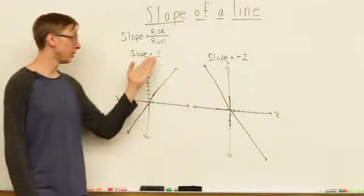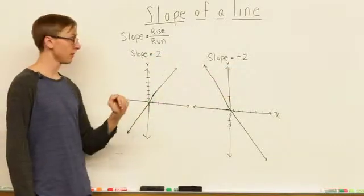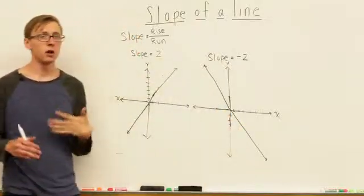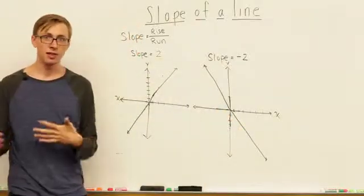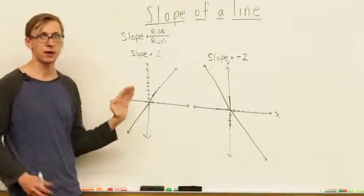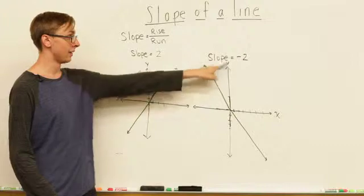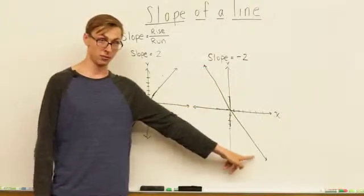As you can see, the positive 2 is going on an upward trajectory and with negative 2 it's going downward. Remember you always want to think left to right. Just like we write left to right, we also do math very typically from left to right. So it goes up from left to right and in the negative one it goes down from left to right.